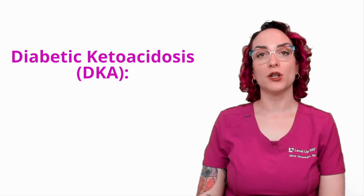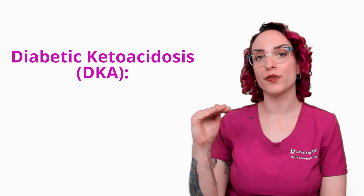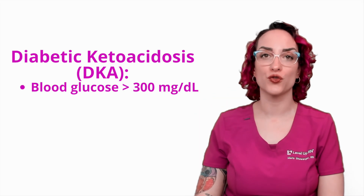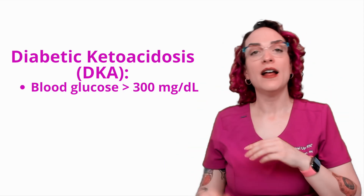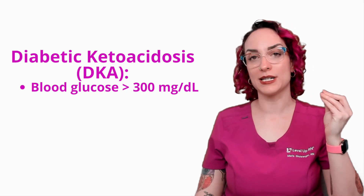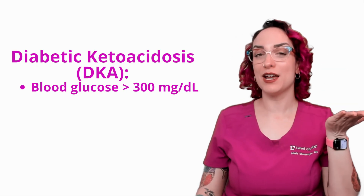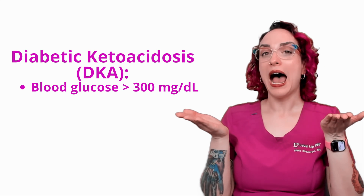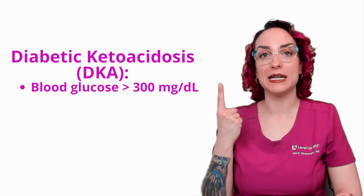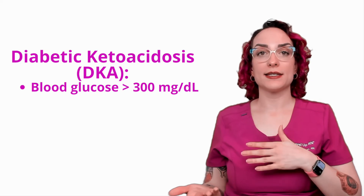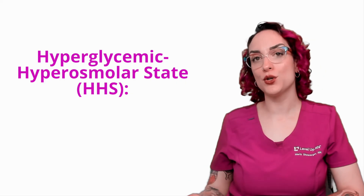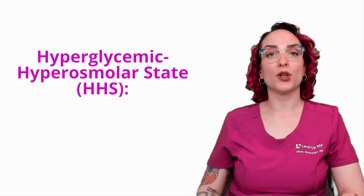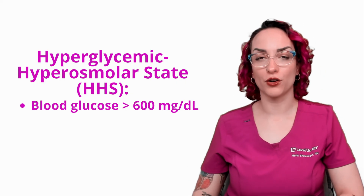With diabetic ketoacidosis, or DKA, the blood sugar cutoff I'm looking for is going to be greater than 300 milligrams per deciliter. This is an abnormal finding — if my patient has type 1 diabetes and a blood sugar over 300, I need to be thinking: could this be DKA? By contrast, hyperglycemic hyperosmolar state, HHS, most likely occurring in the type 2 diabetic, will present with a blood sugar over 600 milligrams per deciliter.